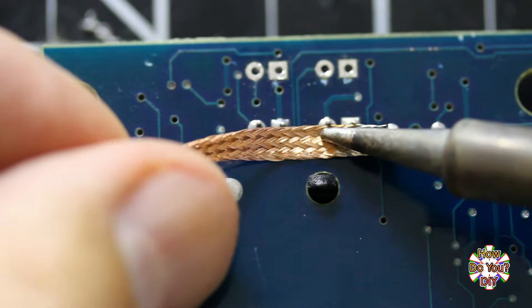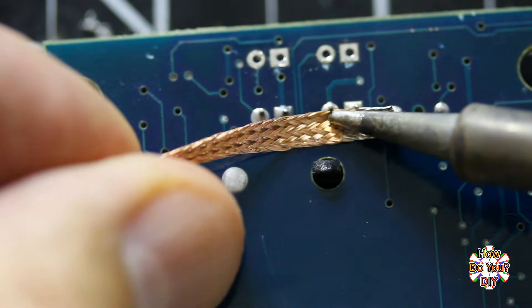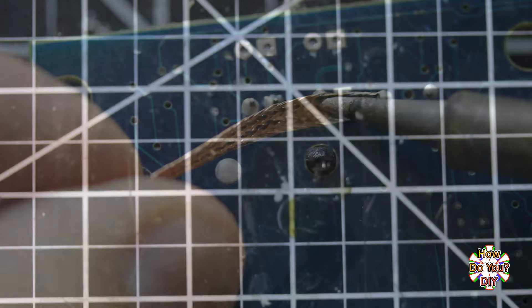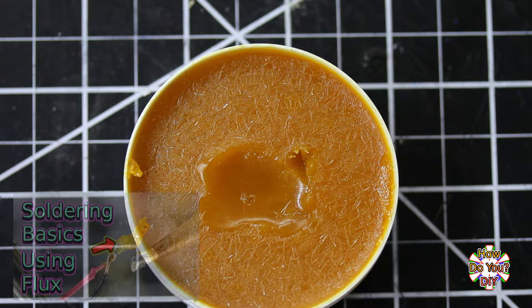Put the desoldering wick on the solder, then use a soldering iron to heat it up. If the solder is not soaking into the wick, use some flux. My video about using flux explains why this will help.